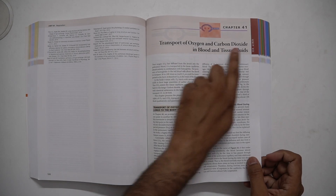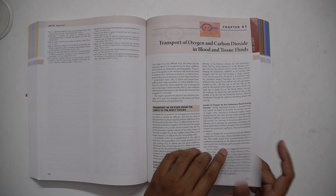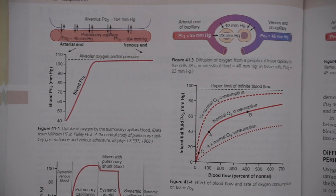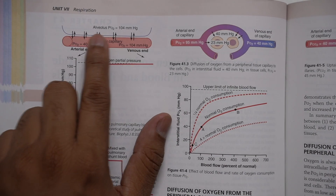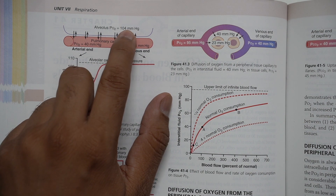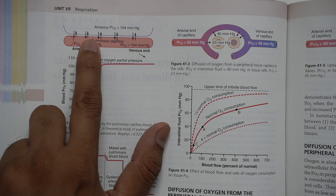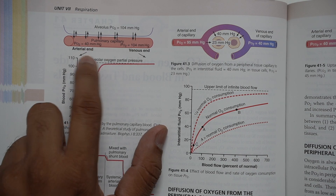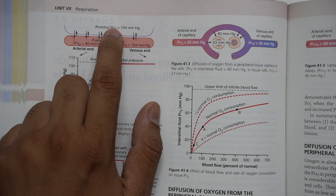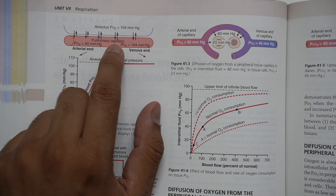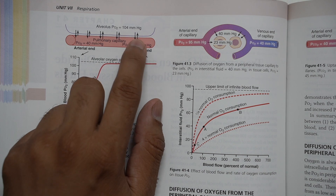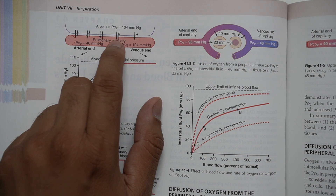Let's look at this in Guyton and Hall, Chapter 41 — Transfer of Oxygen and Carbon Dioxide in the Blood and Tissue Fluids. In the alveoli, the partial pressure of oxygen is 104 mmHg on room air. The deoxygenated blood coming from the right ventricle through the pulmonary artery has a PO2 of 40 mmHg. Oxygen diffuses across this pressure gradient from the alveolus into the pulmonary capillary, and by the time the blood reaches the pulmonary vein, PO2 has equilibrated to 104 mmHg.